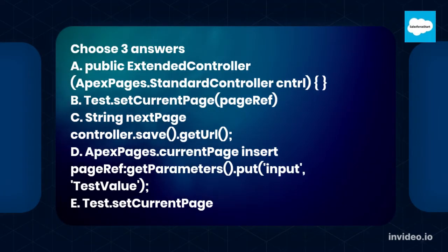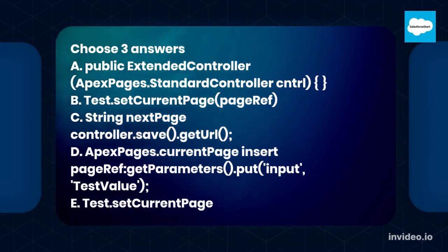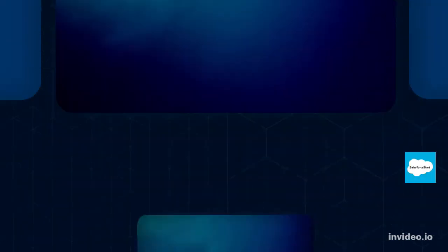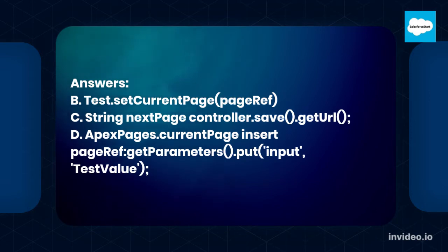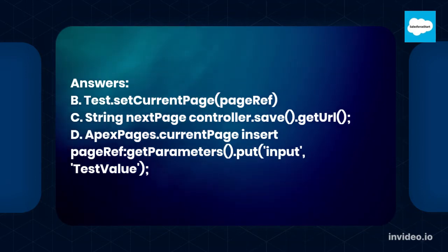Choose three answers. A. Public Extended Controller ApexPages.StandardController. B. Test.SetCurrentPage(PageRef). C. String nextPage = controller.save(); get URL. D. ApexPages.currentPage().getParameters().put('input', 'testValue'). E. Test.SetCurrentPage. Answers: B. Test.SetCurrentPage(PageRef). C. String nextPage = controller.save(); get URL. D. ApexPages.currentPage().getParameters().put('input', 'testValue').